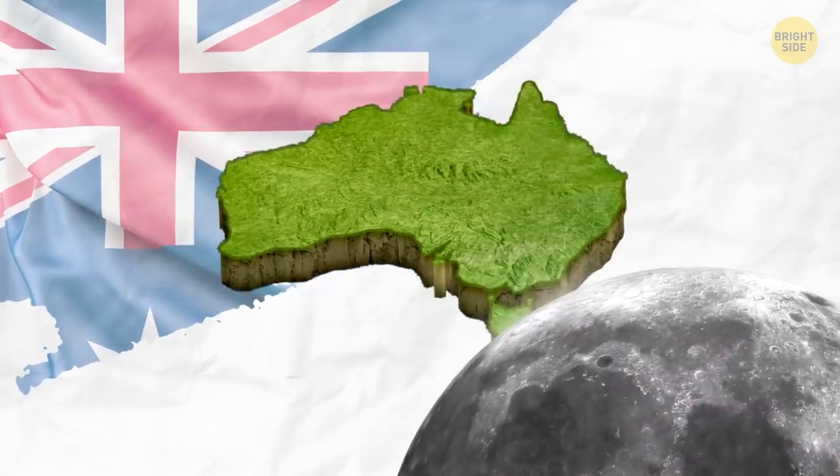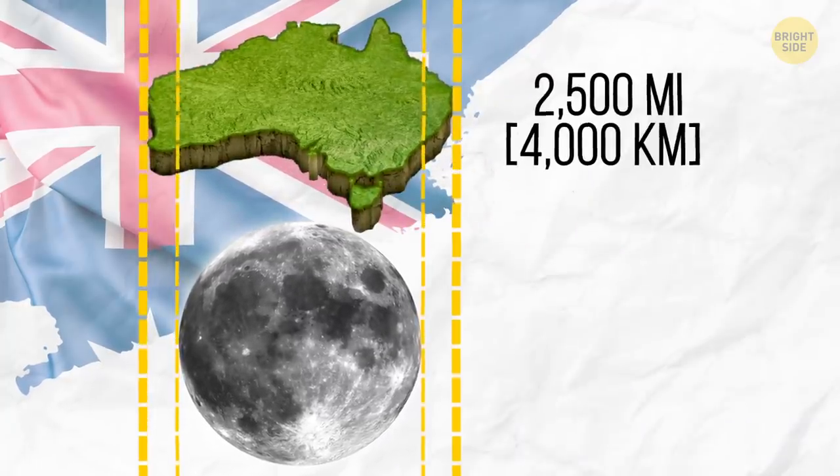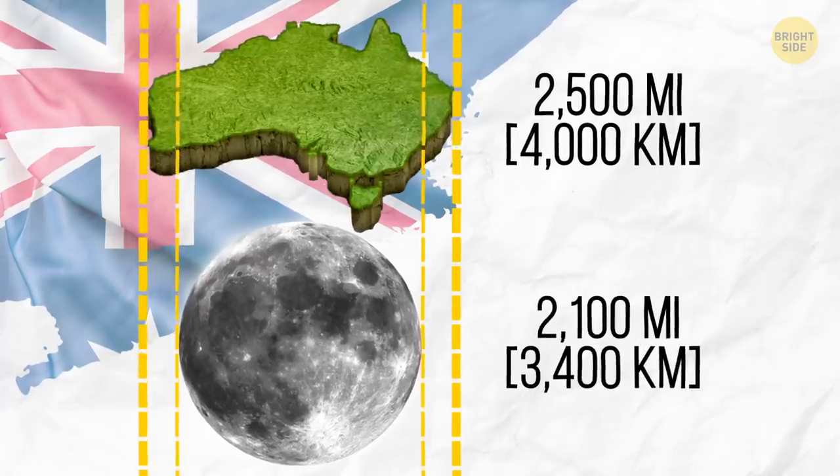Australia is also wider than the Moon. Check the numbers. The land down under is almost 2,500 miles across, and the Moon a little over 2,100.